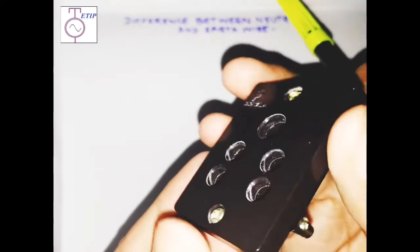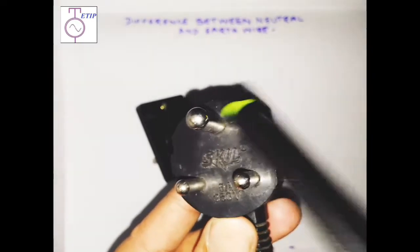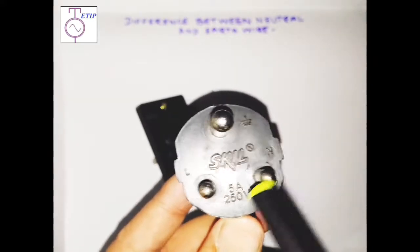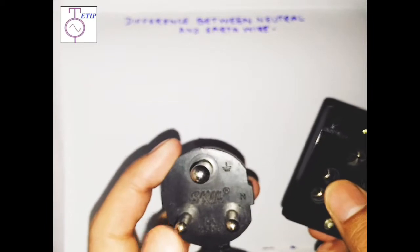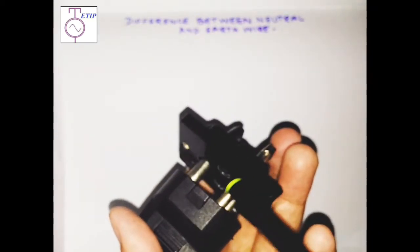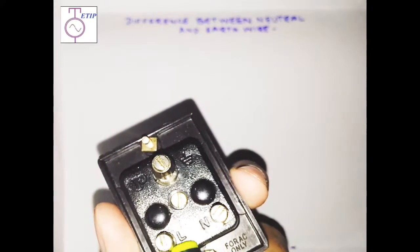Now let me show you a three-pin plug. This is the earth pin, this is the neutral pin, and this is the line pin. In the socket the right-hand pin is the line pin, while in the plug the left-hand pin is the line pin. When connected, the line connects to the line point, neutral to the neutral point, and earth to the earth point.